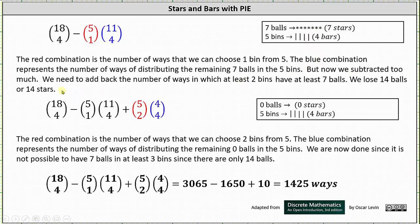But now we have subtracted too much, so we need to add back the number of ways in which at least two bins have at least seven balls. If we place seven balls in two bins, we lose 14 stars — and we only started with 14 balls — so now we have zero stars and four bars. The number of ways at least two bins have at least seven balls is 5 choose 2 times 4 choose 4, where 5 choose 2 is the number of ways to choose two bins from five, and 4 choose 4 represents distributing the remaining zero balls across the five bins, which is just one way.